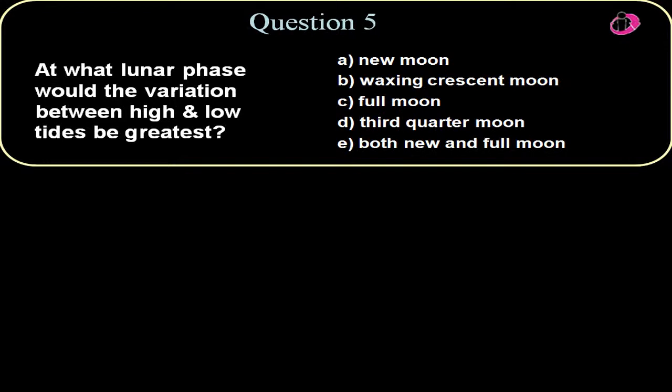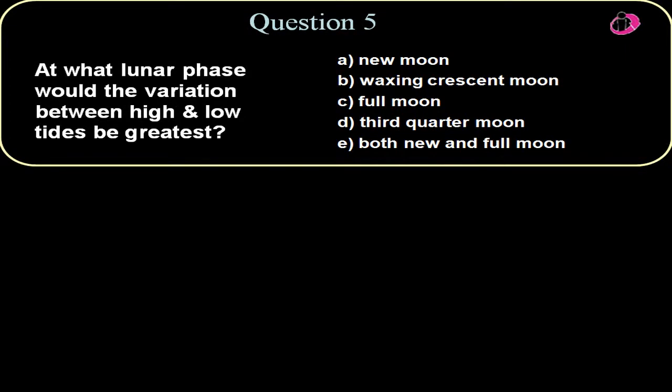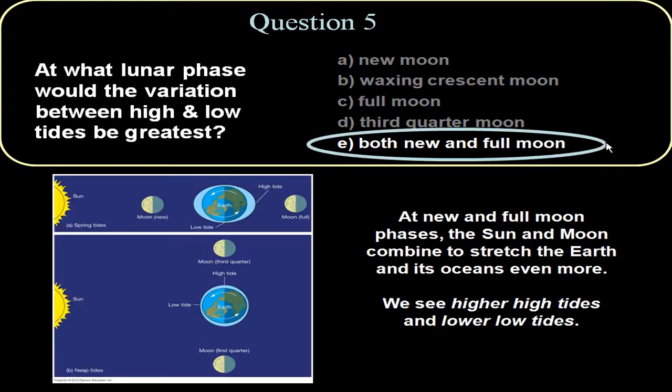Well, the tidal effect is greatest when the moon and the sun work together. So either if the moon and the sun are on the same line as a full moon or if the moon and the sun are on the same line as in a new moon. They both are working together in either case in order to pull the water of the Earth to one side. So a new moon is definitely correct. A full moon is correct. But most correct would be both a new moon and a full moon where they both work together.